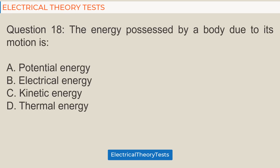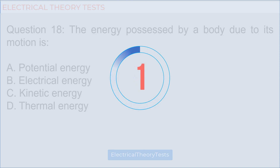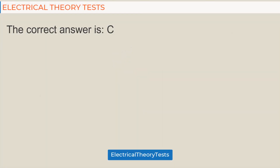Question 18: The energy possessed by a body due to its motion is — a) potential energy, b) electrical energy, c) kinetic energy, d) thermal energy. The correct answer is c) kinetic energy.